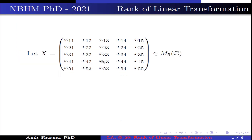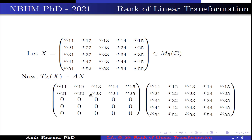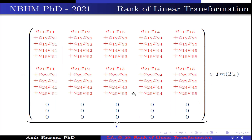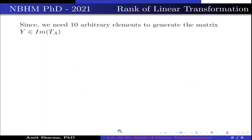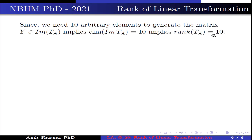Let X be another 5 cross 5 matrix belonging to M5C. Now transformation of X is equal to AX. This is the matrix A and this is the matrix X. The product of these two matrices is a 5 cross 5 matrix and by definition it belongs to the image of TA, represented by Y. Since we need 10 arbitrary elements to generate the matrix Y which belongs to the image of T — this 10 arbitrary element is represented by red color — this implies dimension of image of TA is 10. This implies rank of TA is 10.